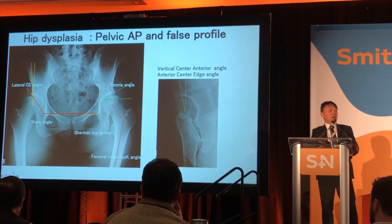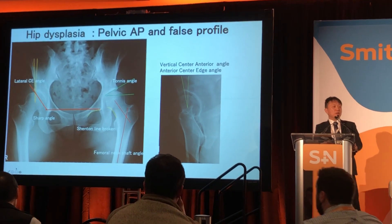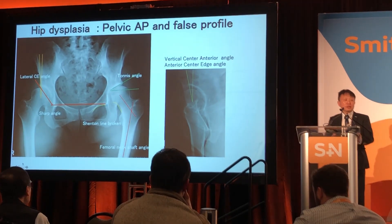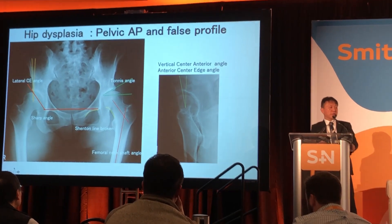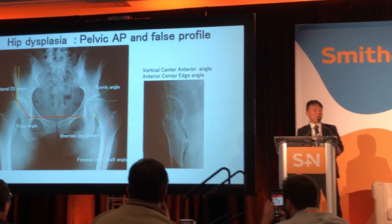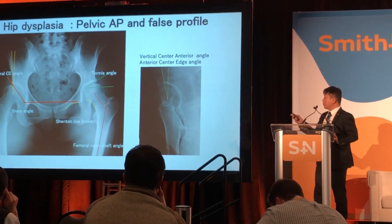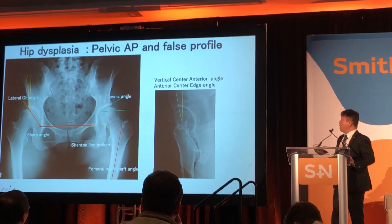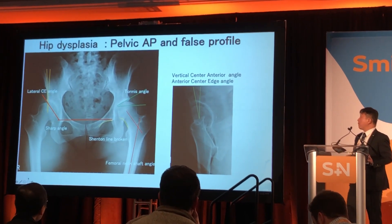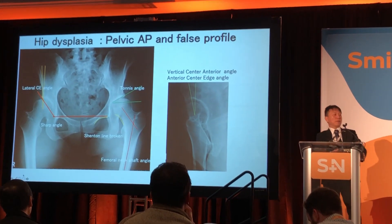To assess hip dysplasia, on pelvic AP view and false profile view we must measure several radiographic parameters: lateral center edge angle, Sharp angle, and Tönnis angle. We also assess the Shenton line and femoral head coverage. On false profile views, the vertical center edge angle should also be measured.